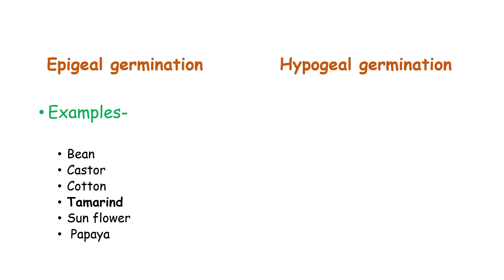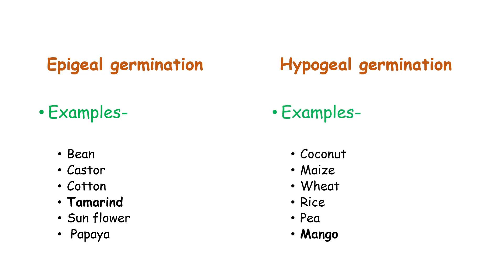Tamarind is a very common example of epigeal germination. For hypogeal germination, the examples are coconut, maize, wheat, rice, pea, and mango.